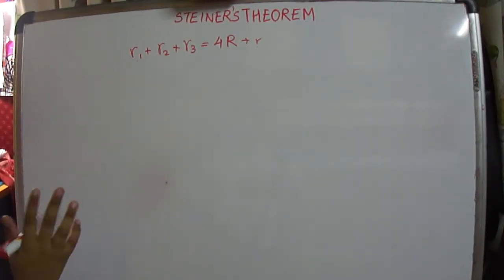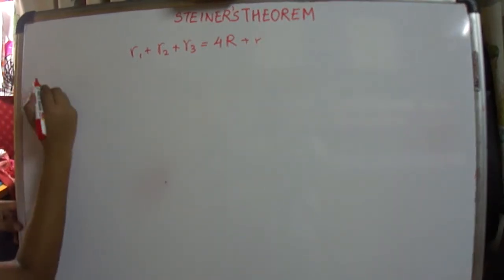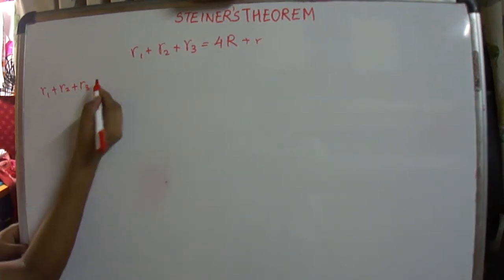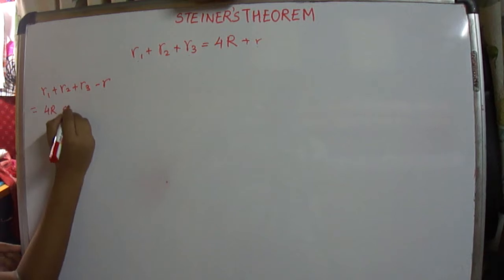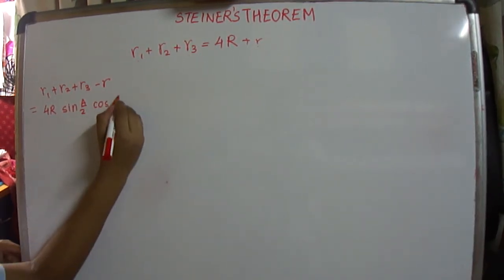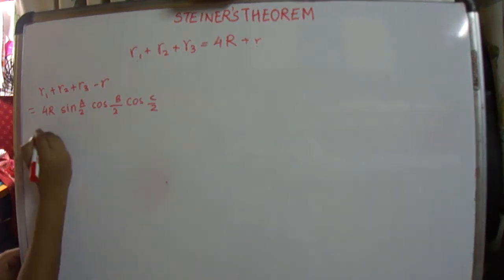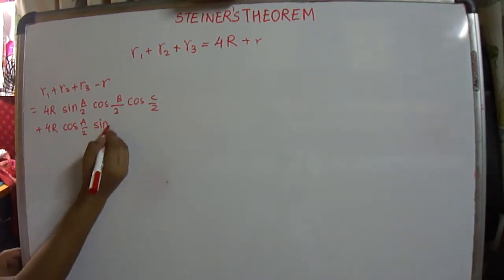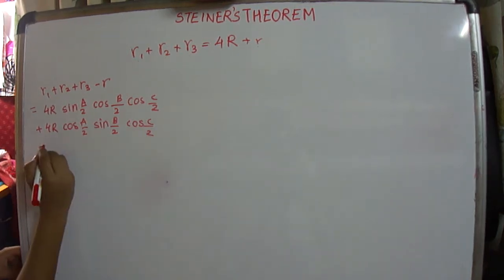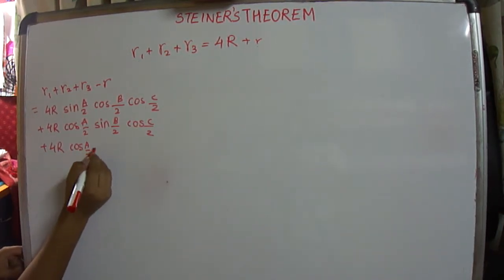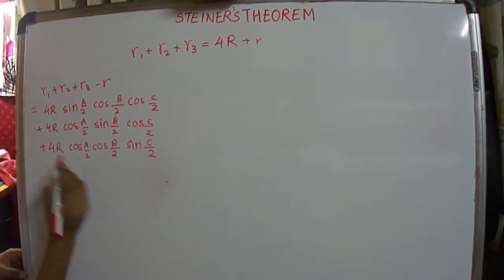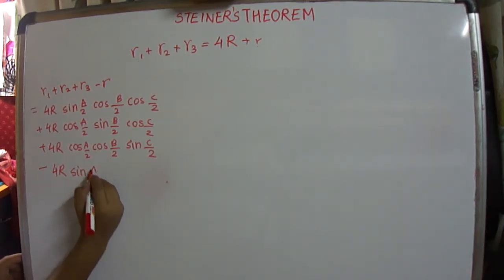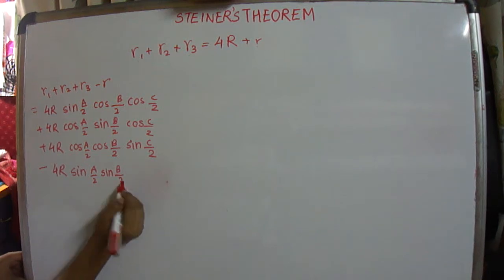So we can put them here and try to prove this theorem. We can rewrite R1 plus R2 plus R3 minus r using the known formulae as 4R sin(A/2)cos(B/2)cos(C/2) plus 4R cos(A/2)sin(B/2)cos(C/2) plus 4R cos(A/2)cos(B/2)sin(C/2) minus 4R sin(A/2)sin(B/2)sin(C/2).